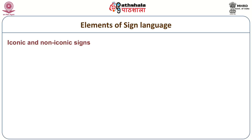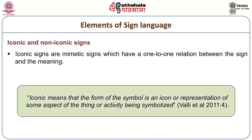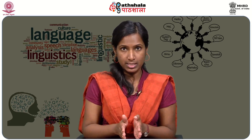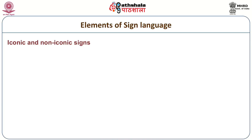Manual signs include iconic and non-iconic signs. Iconic signs are mimetic signs which have a one-to-one relation between the sign and the meaning. Iconic means that the form of the symbol is an icon or representation of some aspect of the thing or activity being symbolized. For example, signs for 'eat', 'give', and 'write' have a one-to-one relation between the sign and the meaning. These are called iconic signs.